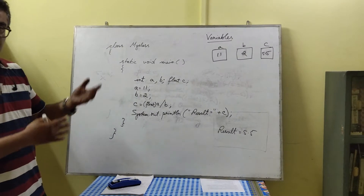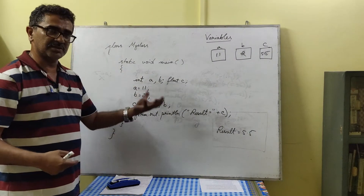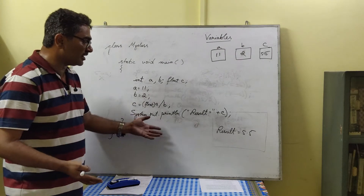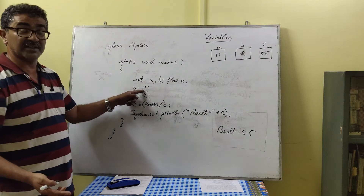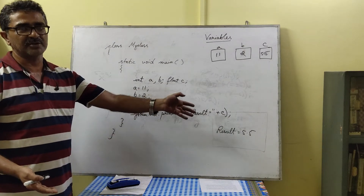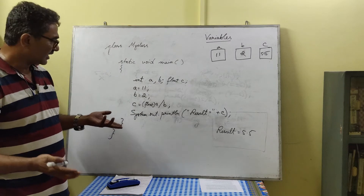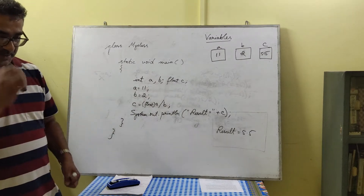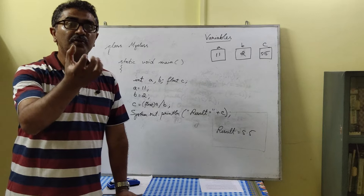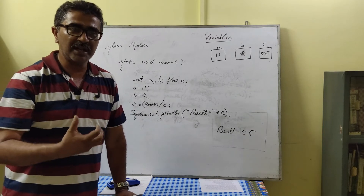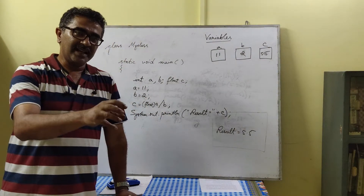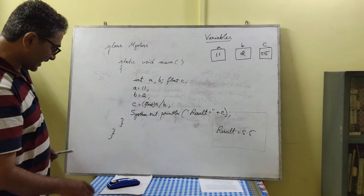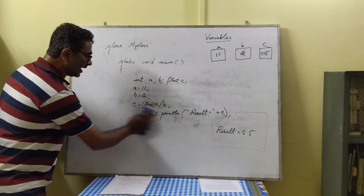Every time we execute this program, it always gives the same result — 5.5 — because we always divide 11 by 2. To get a different result we would have to change the values in the text editor. Instead, we can take two values from the user as input, add them, and display the result — similar to how a calculator works.